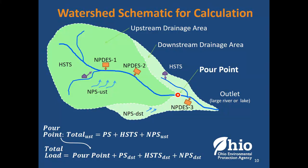The way we do this balance: we add up the permitted point sources — wastewater treatment plants and industrial sources — then add up the home sewage treatment systems. The remaining load needed to equal what the total pour point measured is attributed to non-point source. Someone asked what it takes to be a permitted source: Ohio EPA is pretty good at making people get permits if they have a point source, and smaller facilities fall under general permits. Background loading would be within the non-point source — it's all grouped in there. What's left over after adding up known sources is what we attribute to non-point source.